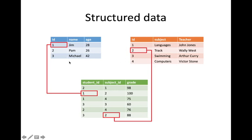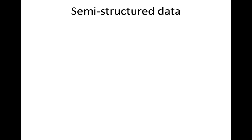Here we have three tables as an example. One table has ID, name, and age. Another has student ID, subject ID, and grade. A third has ID, subject, and teacher. All these are connected — there is some link between them and each has a well-organized structure with particular fields. These are called relations or tables. This is structured data, and we will learn all these things later.